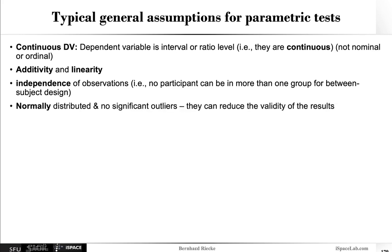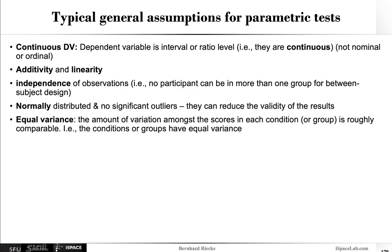The data should, of course, be normally distributed without any significant outliers, because they can really reduce the validity of the results. And then there's also equal variance. So basically, the amount of variation amongst the scores in the different conditions or groups should be roughly comparable. That means the conditions or groups should really have equal variance.